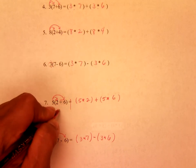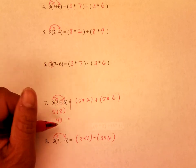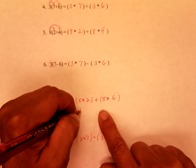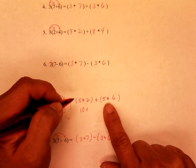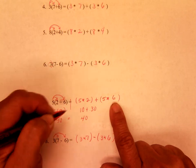So, it would be 5 times 8, and 5 times 8 is 40. Let's see if we get 40 on this side. 5 times 2 is 10, plus 5 times 6 is 30, and 10 plus 30 is 40. And we get the same answer.